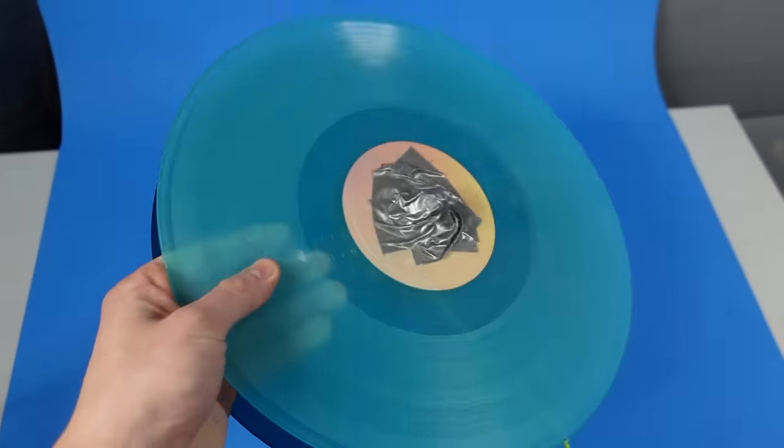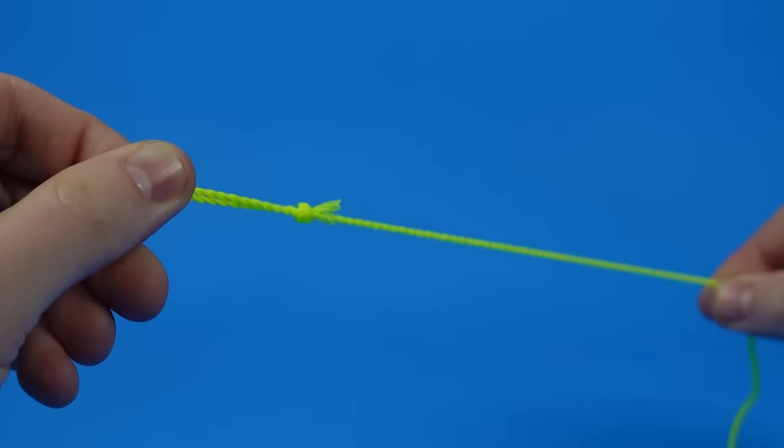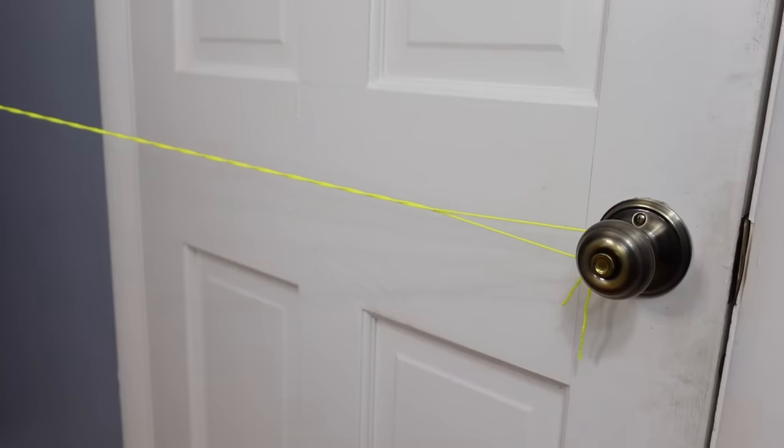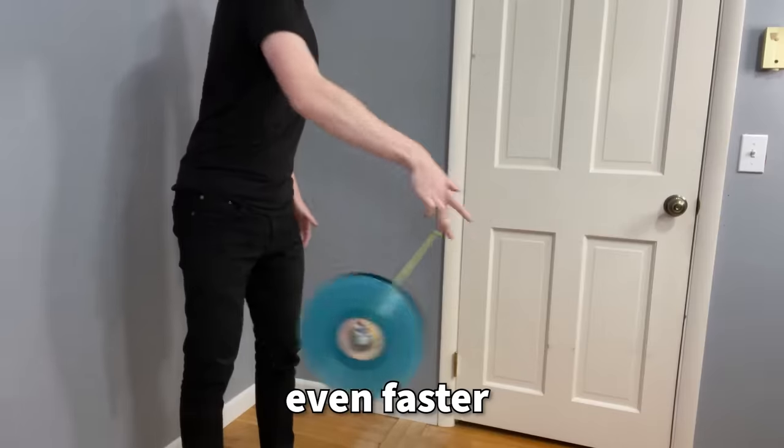At this point, the yo-yo was pretty much done, but I wanted to make an adjustment to the string. Instead of using one regular string, I took several of them and spun them together to make one mega string. I'm thinking a thick string and a large axle will help it unwind even faster.